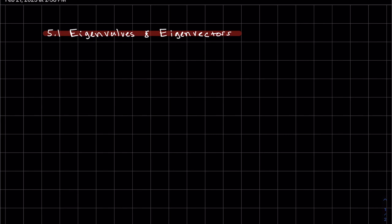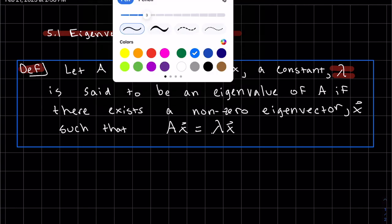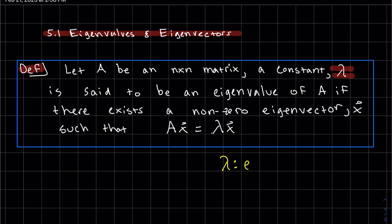Okay, today is chapter 5.1, eigenvalues and eigenvectors. We're going to start off with the definition. So A is an n by n matrix. It's a square matrix, and the constant, we call this lambda, the constant lambda is said to be an eigenvalue of A if there exists a non-zero eigenvector, the eigenvector we'll call X, such that A times X is equal to lambda X.